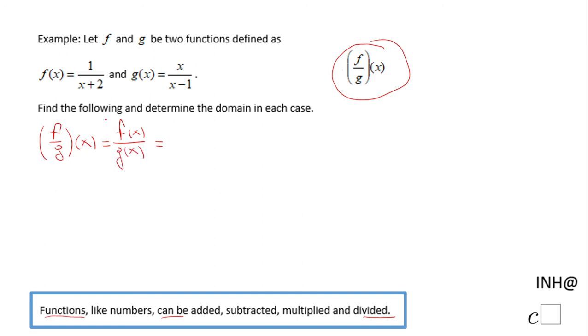In our case, f(x) is the rational expression 1 over x plus 2, so we have 1 over x plus 2 divided by the rational expression x over x minus 1.